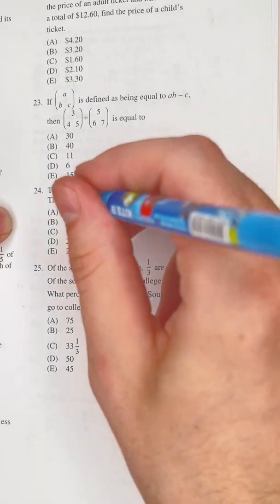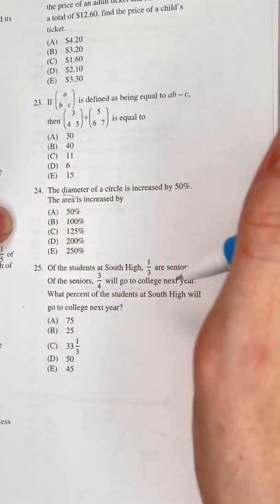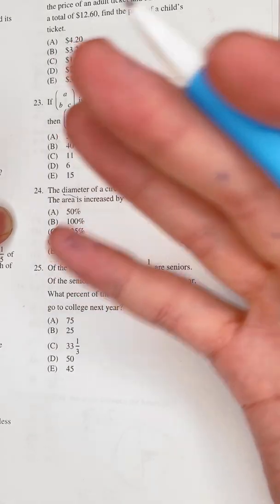So let's set it up. If we know that the diameter increased by 50 percent, that means the radius also increased by 50 percent.